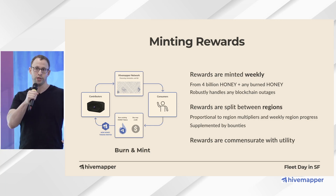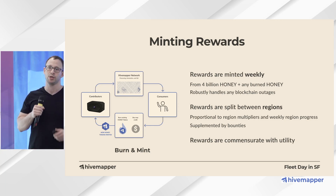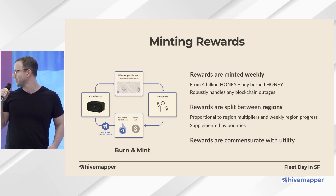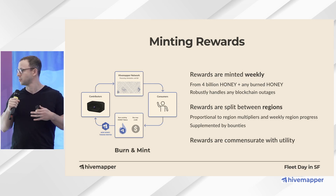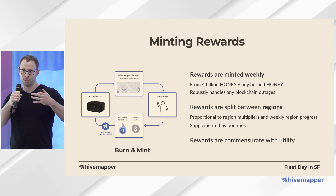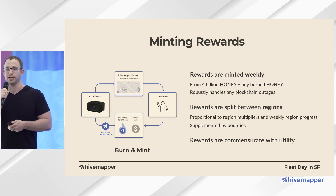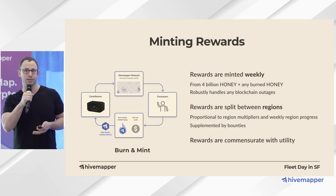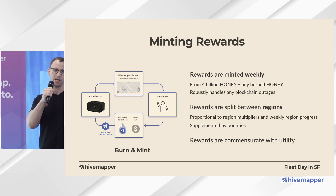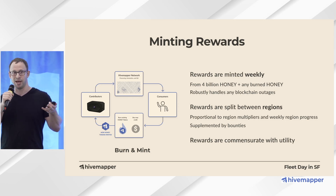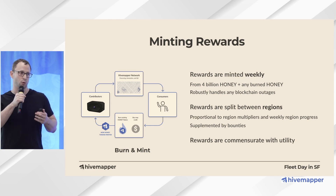Rewards are split between regions. Regions are split around the world — they can be arbitrarily sized. They can represent cities, countries, or interesting parts of a county. It could be anything. So we need a way to fairly distribute tokens according to that.